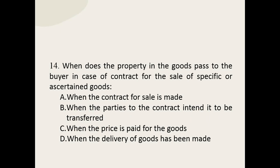Q14: When does the property in the goods pass to the buyer in case of a contract for the sale of specific or ascertained goods? The options are: when the contract for sale is made; when the parties to the contract intend it to be transferred; when the price is paid for the goods; when the delivery of goods has been made. The correct option is: when the parties to the contract intend it to be transferred.